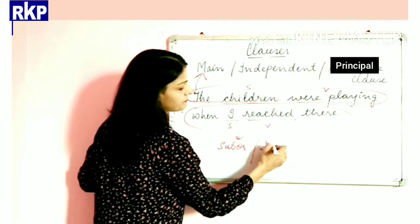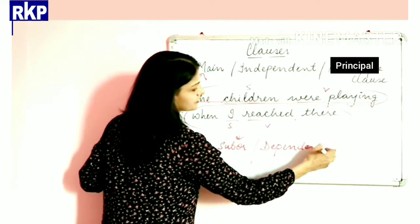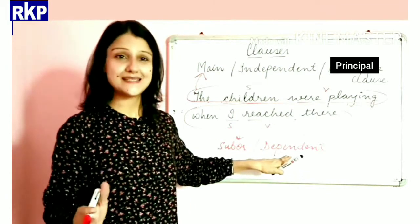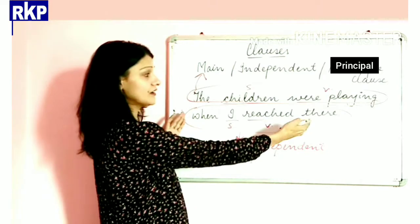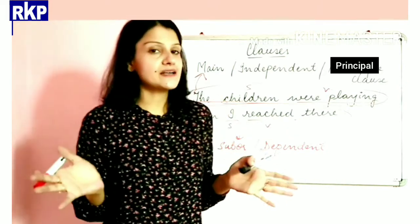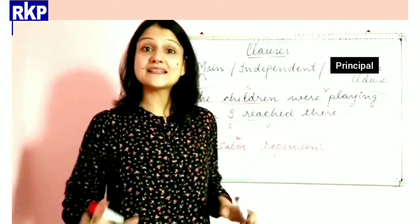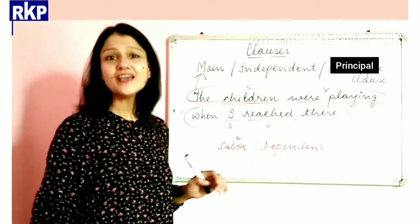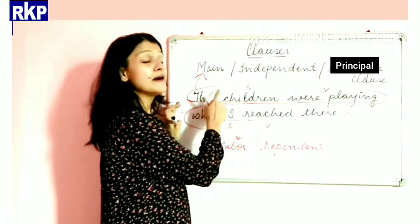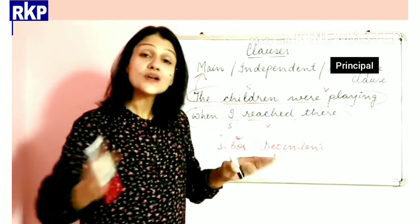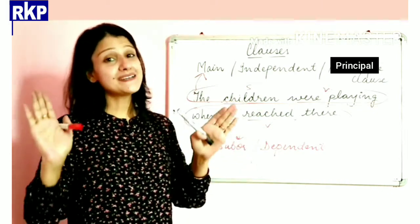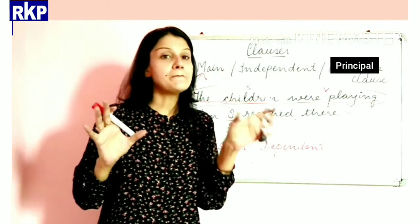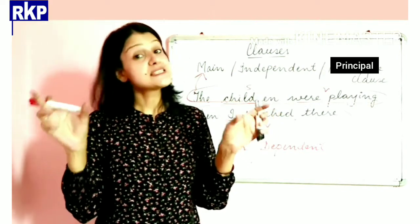Now you understand why it is called dependent — when we read 'when I reached there' alone, we don't get complete sense. To get complete sense we need the main clause. Only when we read the main clause along with the subordinate clause do we get the complete sense. I hope you now understand what a main clause and a subordinate clause are.